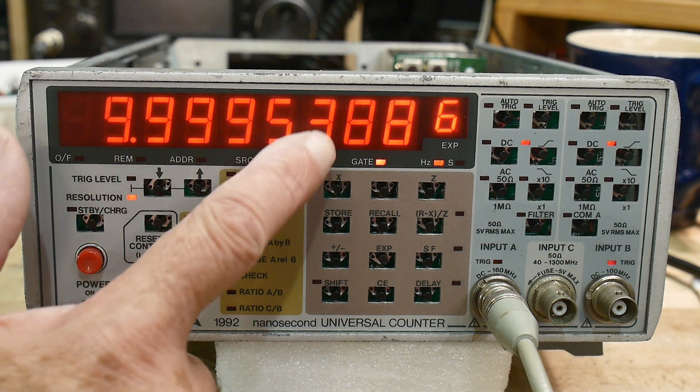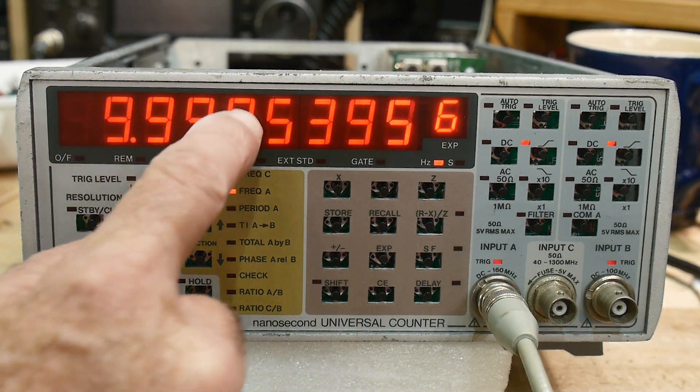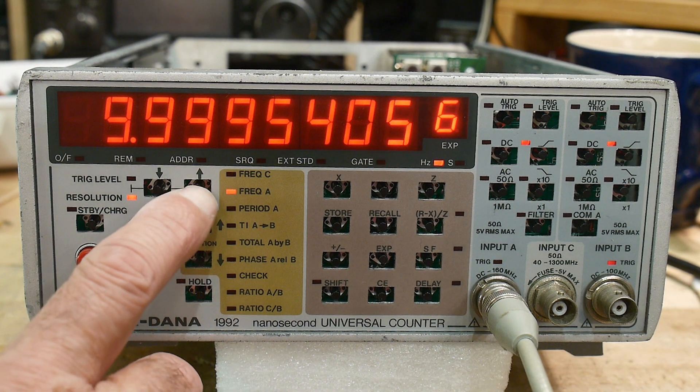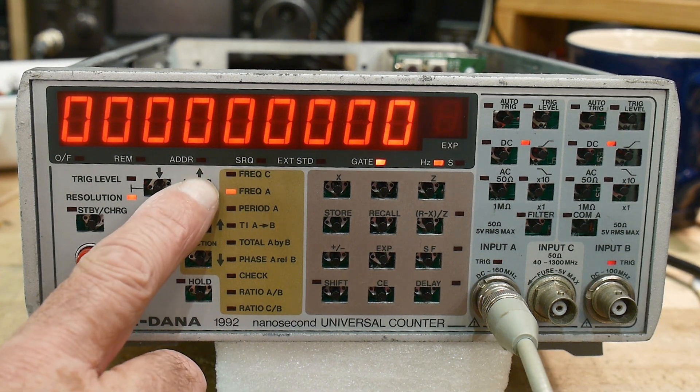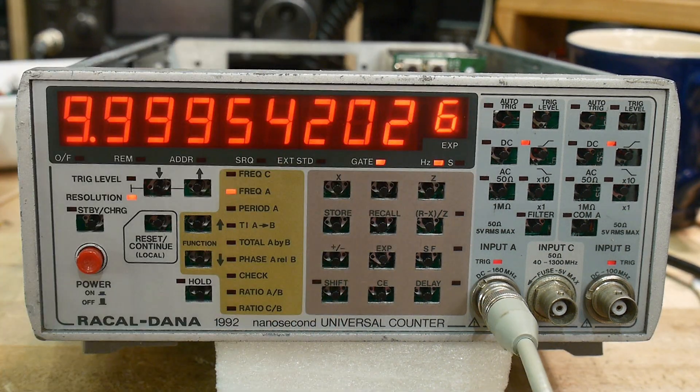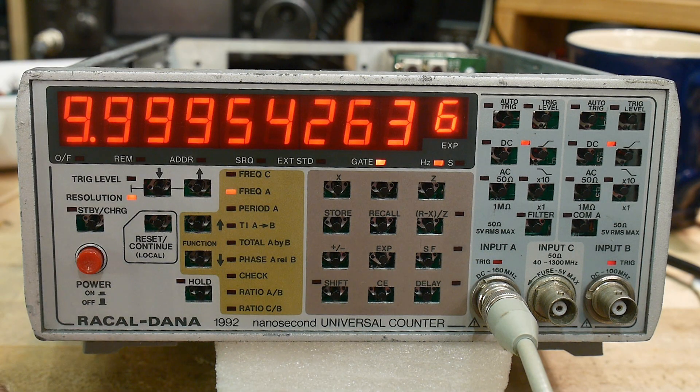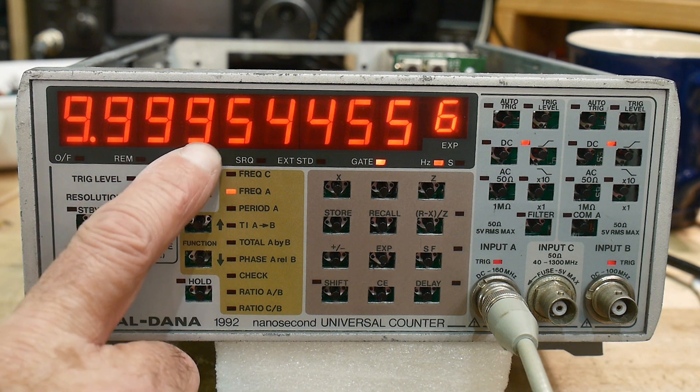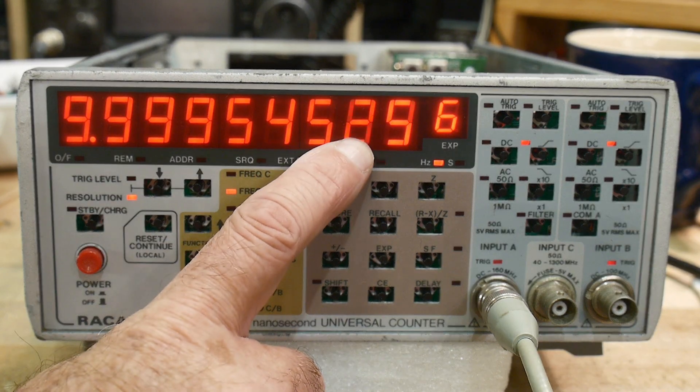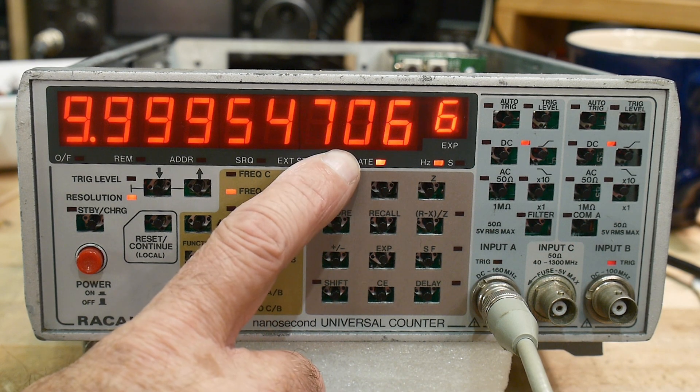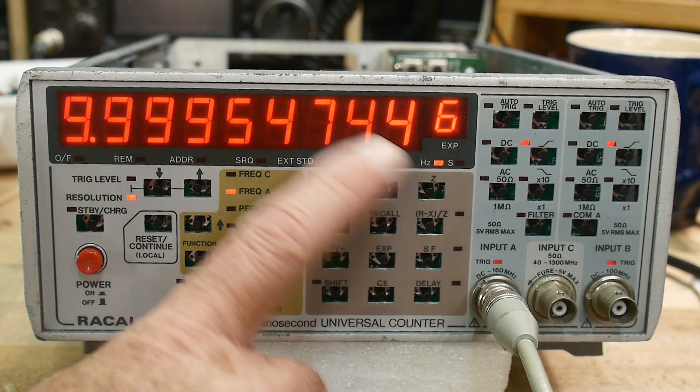I can change how many digits of resolution this thing has, and it goes out to 10 digits. One, two, three, four, five, six, seven, eight, nine digits, sort of ten. So let's go one more. Yeah, one through nine digits. I thought it was 10 digits. It's nine digits plus the exponent, so that's the total 10 digits. So nine digits, but we're getting way out here, right.